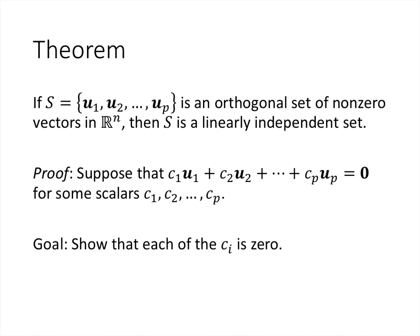A theorem that should be somewhat surprising here is that if we have an orthogonal set of vectors, then that set automatically has to be linearly independent. It might be surprising because the definition of orthogonality doesn't seem to have anything to do with linear combinations, but it does turn out that this theorem is true. So let's see how the proof goes. How do we prove that a set is linearly independent? We suppose that we have a linear combination of those vectors that equals the zero vector, and our goal is to show that each of the coefficients is 0. We need to bring in the information about orthogonality — how do we introduce dot products?